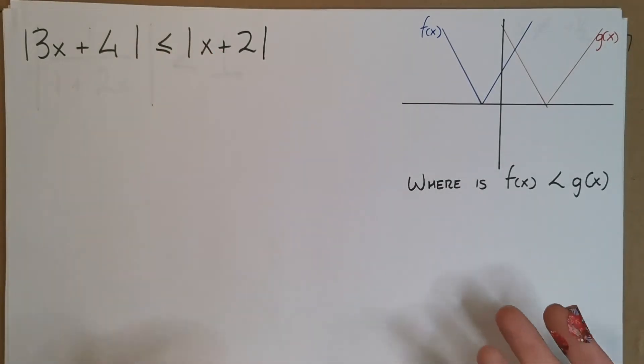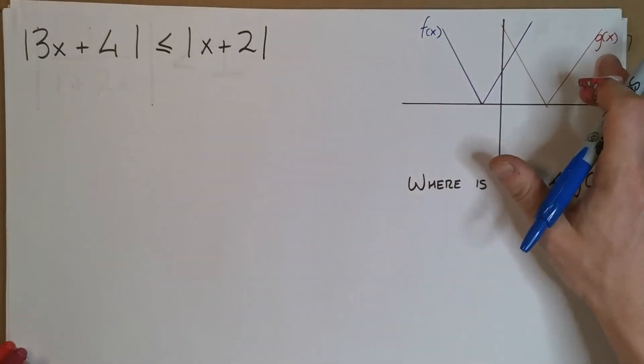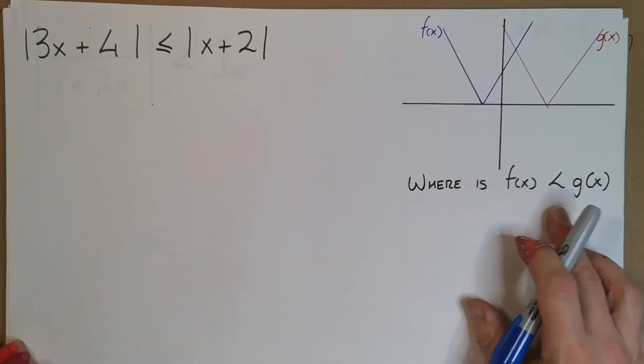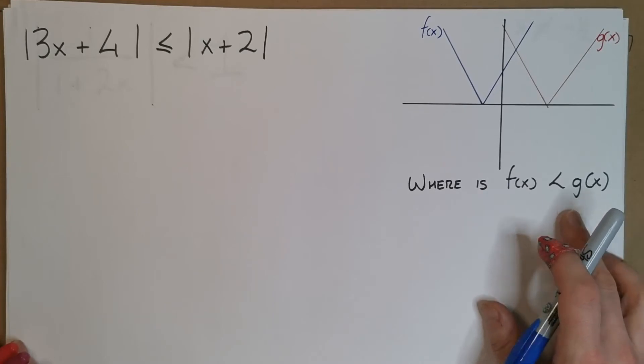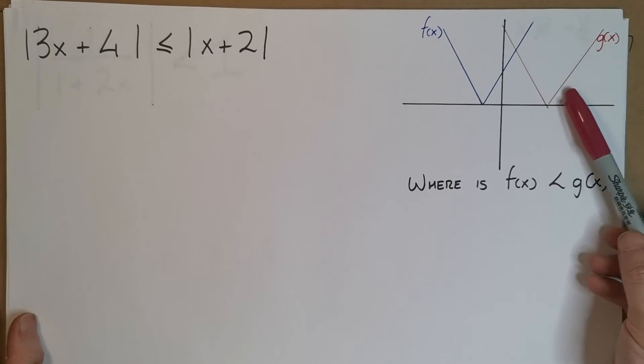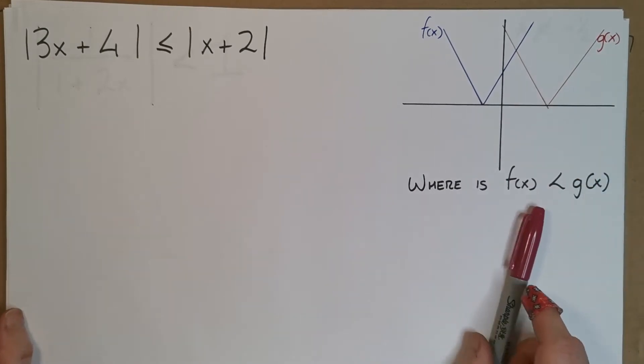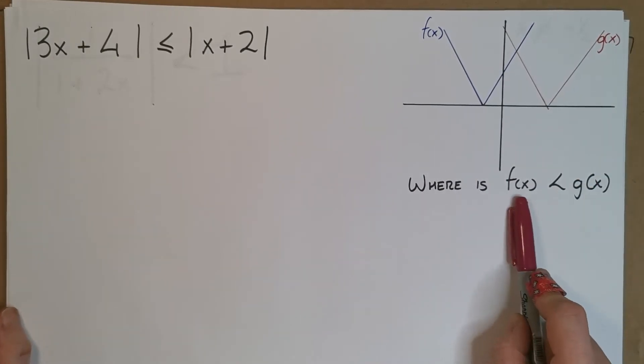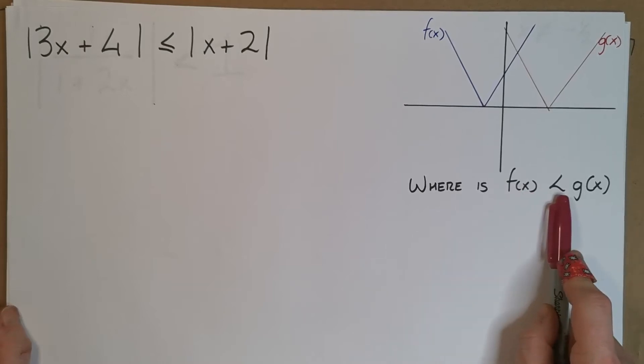I want you to think about it like this. Without giving any specifics, here's two modular equations, f(x) and g(x). If I was to ask you where was f(x) less than g(x), well let's look. There's f(x), the blue graph, and here's g(x), the red graph.